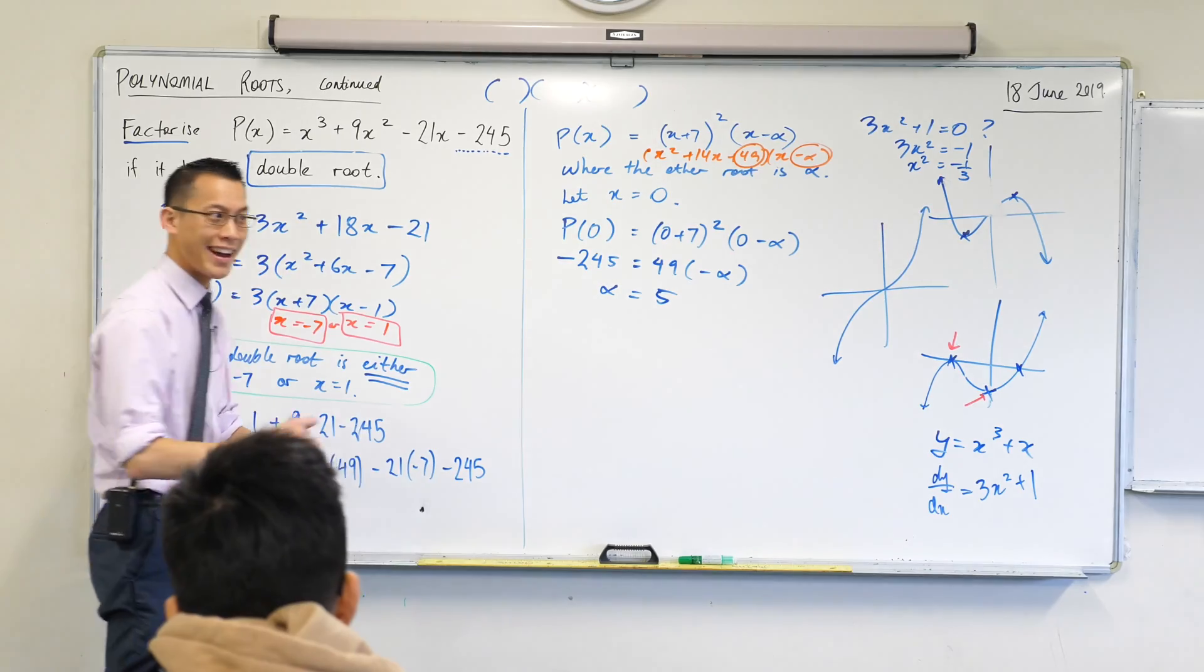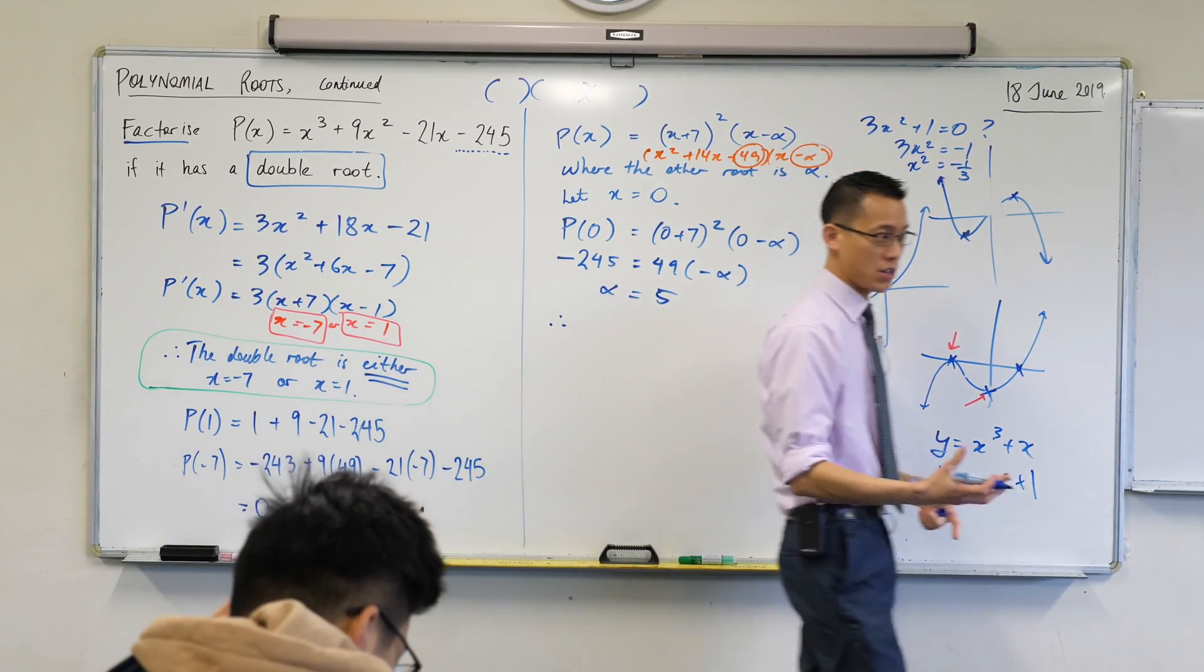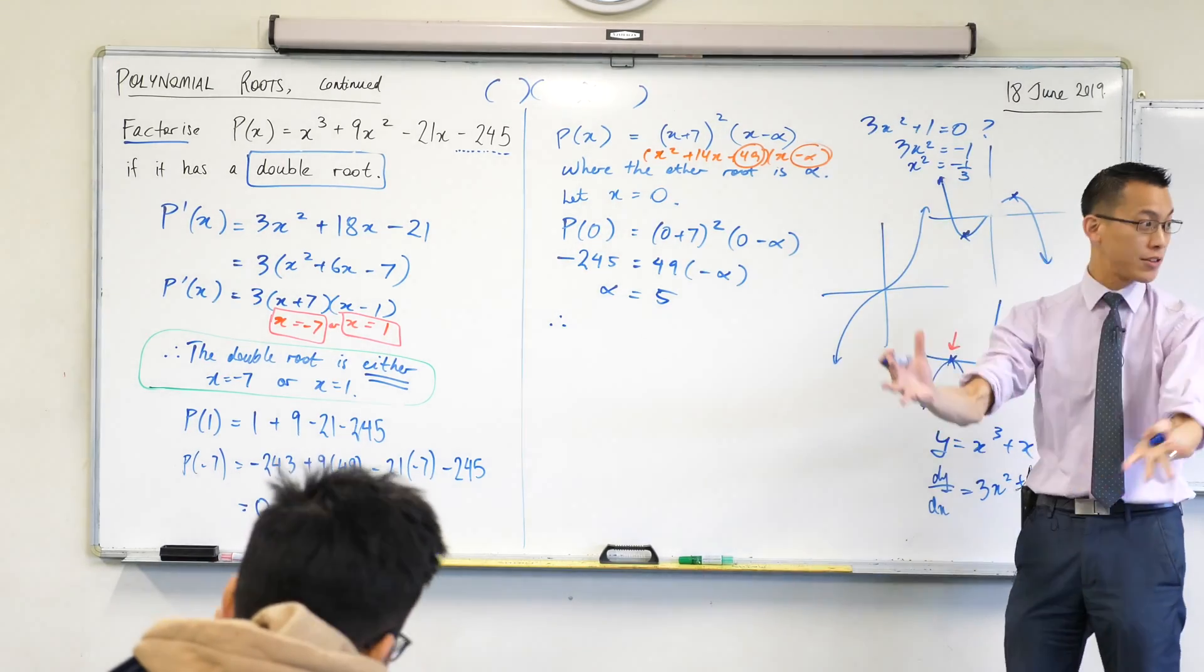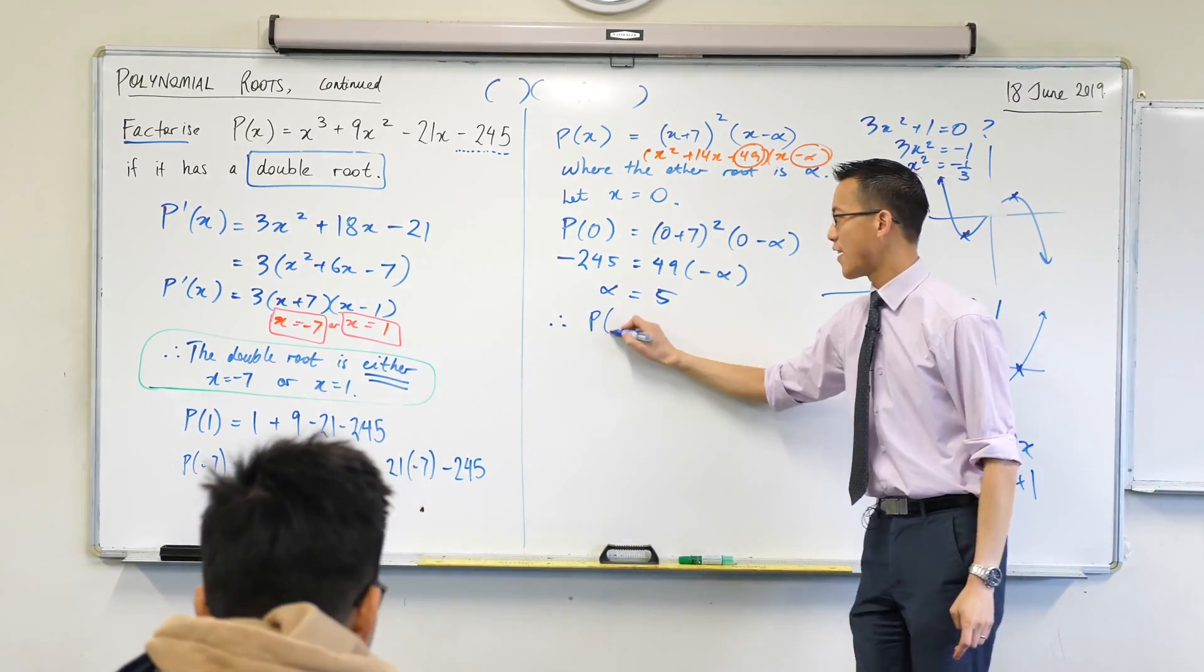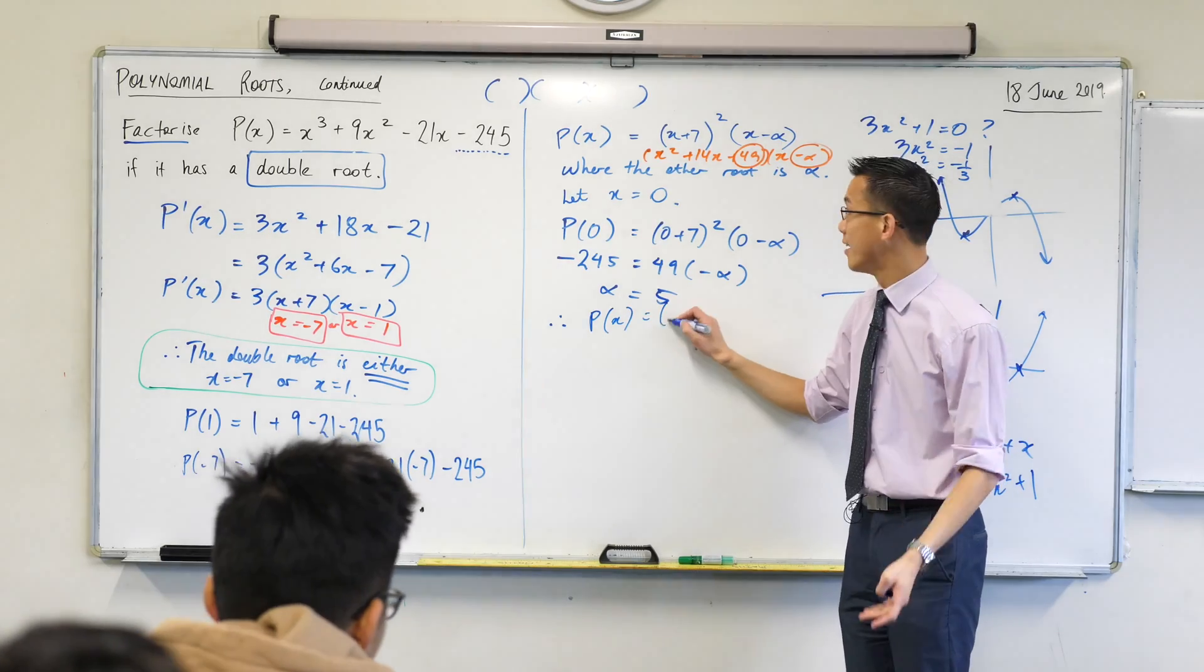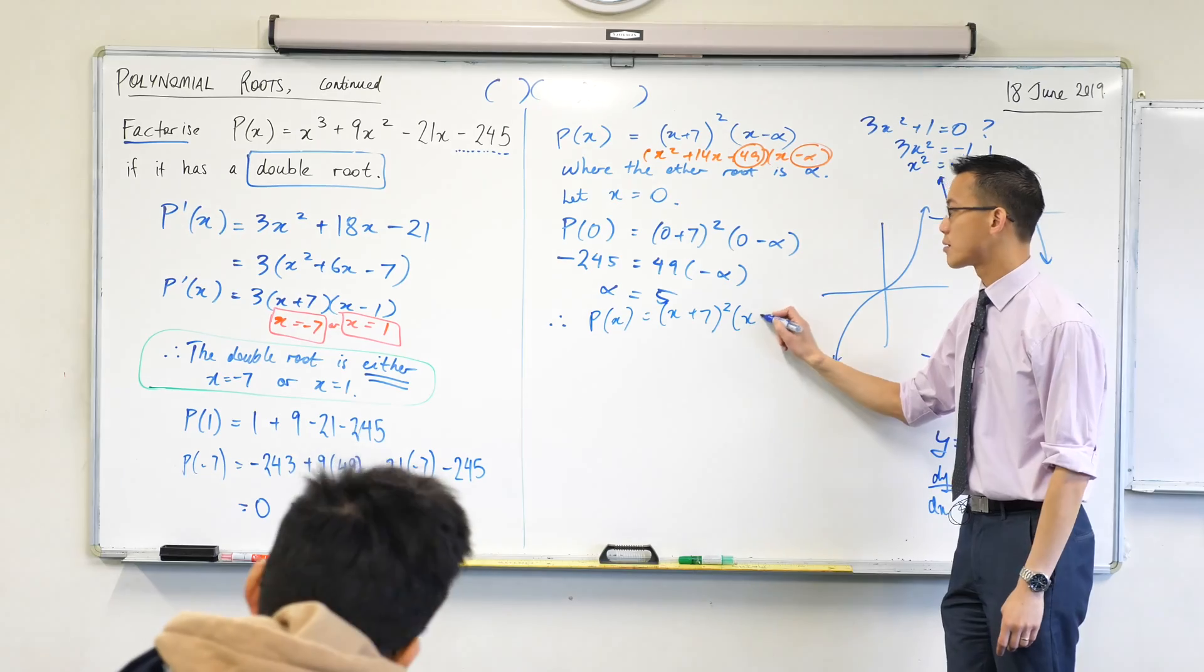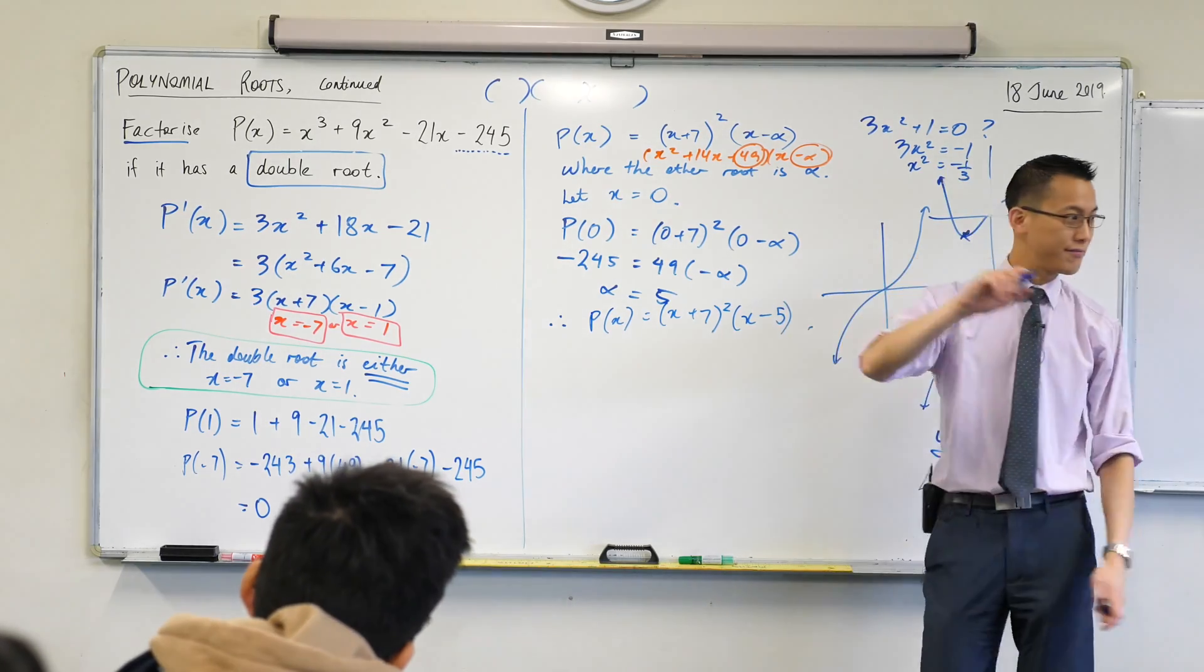So as my final line, I can say, therefore, because alpha is not what I was searching for, my original question was factorize, right? So I can finish the factorization. I had most of it there, didn't I? X plus seven all squared, and then x minus five. Done skis.